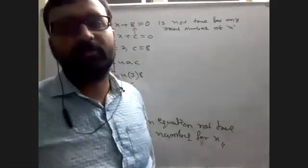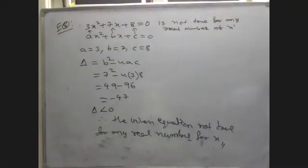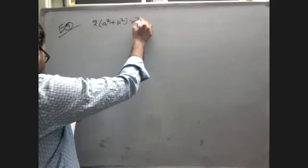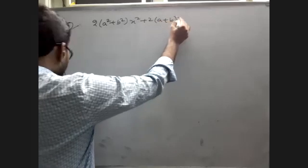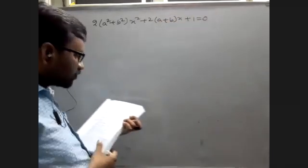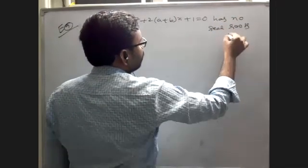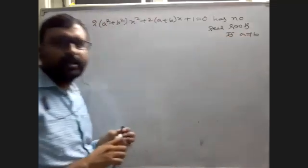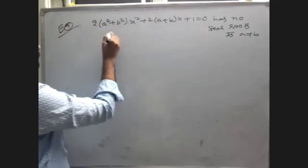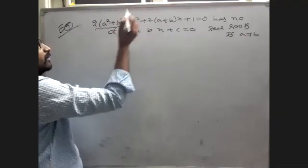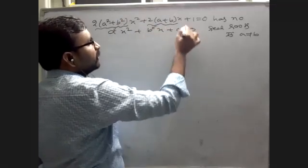Example 9: Show that the equation 2(a² + b²)x² + 2(a + b)x + 1 = 0 has no real roots, if a ≠ b. We have to prove this also has no real roots. By comparing with Ax² + Bx + C = 0, the coefficient of x² is A = 2(a² + b²), the coefficient of x is B = 2(a + b), and C = 1.